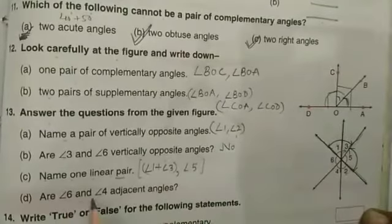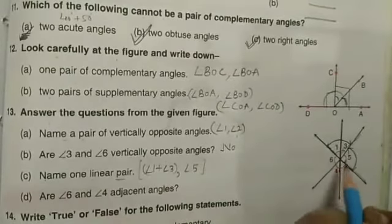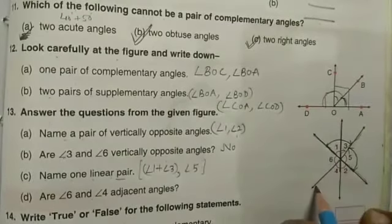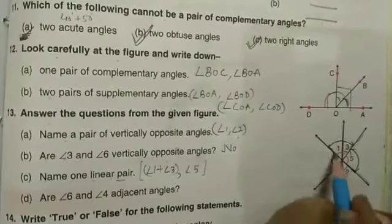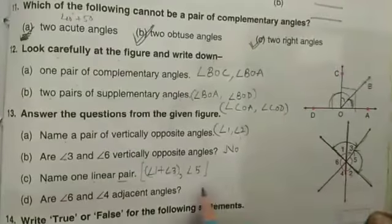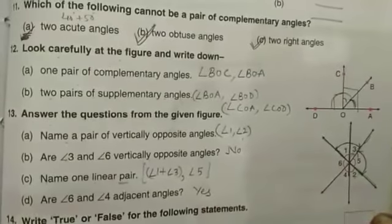Are angles 6 and 4 adjacent? They have a common vertex. They have a common arm. And common arm is between non-common arms. So yes, these are adjacent angles.